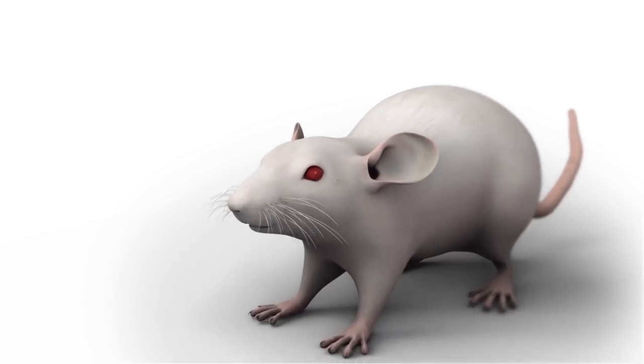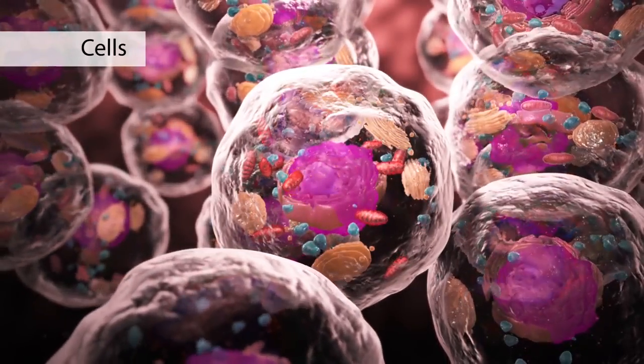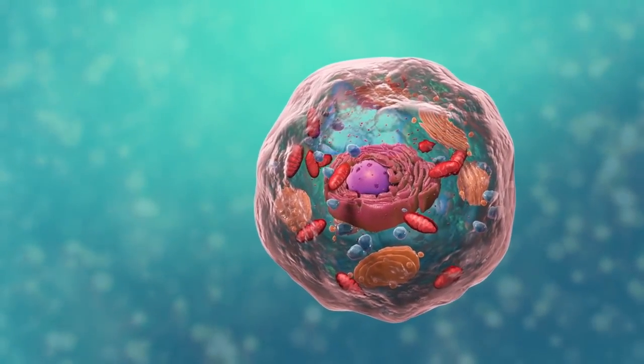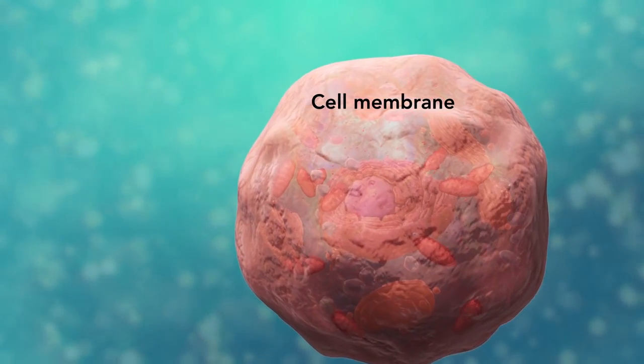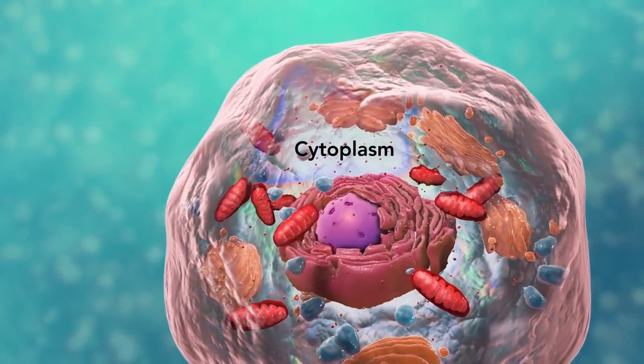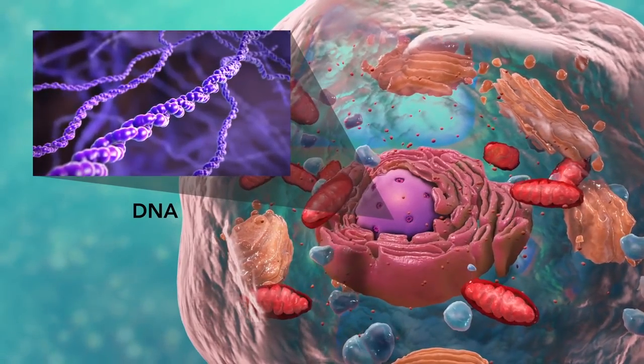Cells are the smallest living units of an organism. All cells have three things in common no matter what type of cell they are. All cells have a cell membrane which separates the inside of the cell from its environment, cytoplasm which is a jelly-like fluid, and DNA which is the cell's genetic material.